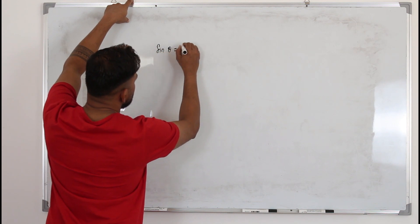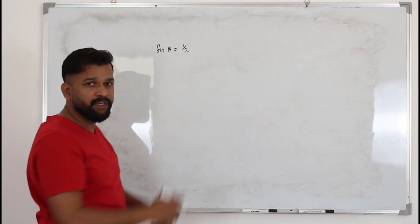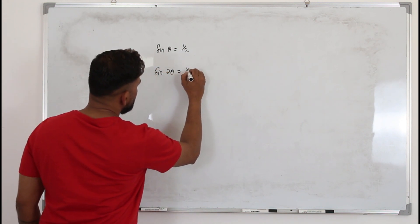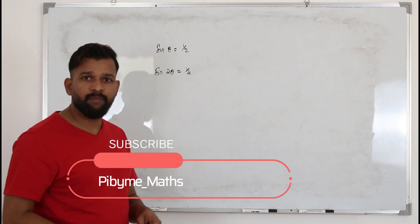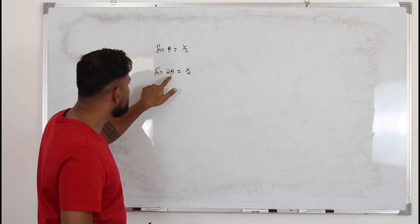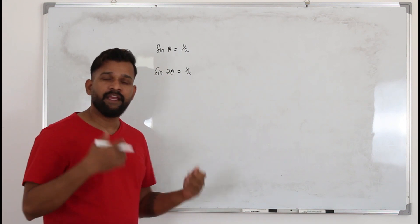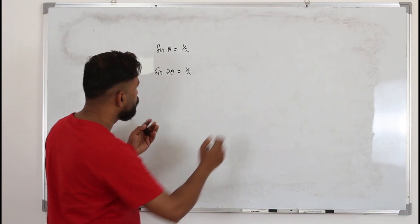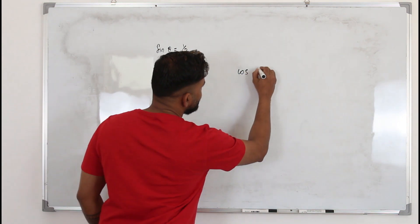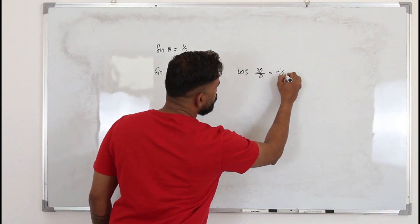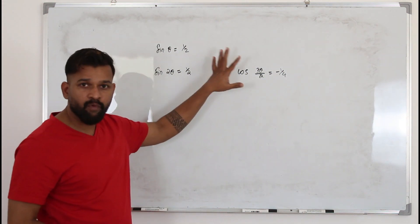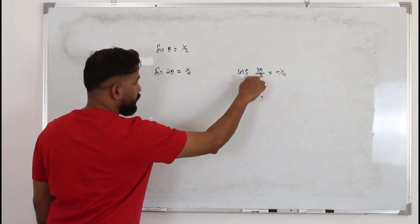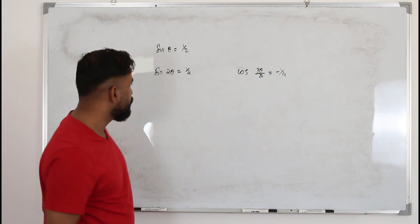If you have sine θ = ½, it's a simple trigonometric equation. But when you have sine 2θ = ½, it's called a harder trigonometric equation, because instead of θ you have some other number associated with θ. It can be 3θ, 5θ, θ/2 — anything. For example, cos(3θ/2) = -1/4. Type 1 means θ is multiplied by or divided by some number.